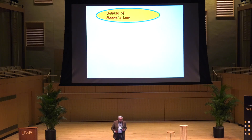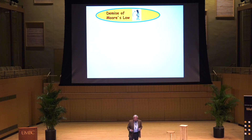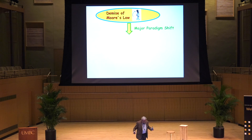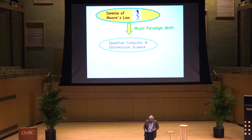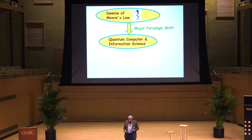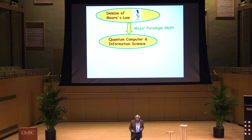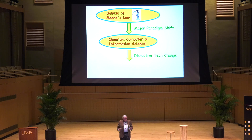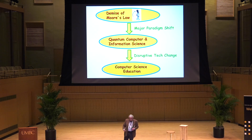All of this began, in a certain sense, with the demise of Moore's Law, and this is driving a huge disruptive change in our society — a major paradigm shift. One of these major changes is quantum computing and quantum information science, which will affect society in a big way. But more importantly from my point of view, it will have a major impact on computer science education, and that's the purpose of my talk today.